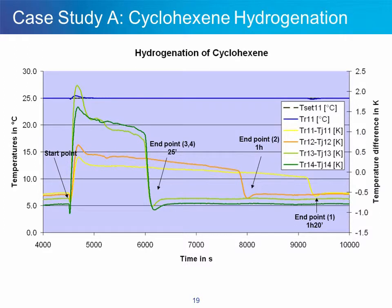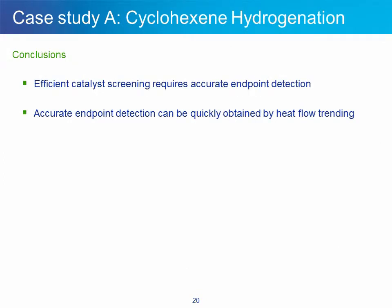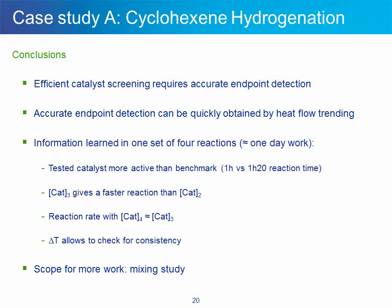You get here the kind of data that would be difficult to obtain using alternative chromatographic methods, where you would have to pull out a sample every so often and run an analysis, which in the best case takes about 20 to 30 minutes. As a conclusion for this first case study, the heat flow training can be used easily and graphically to determine the endpoints of a reaction in up to four vessels at the same time. What we've learned is that the new catalyst is more active than the benchmark, and that the reaction can be made faster by increasing catalyst amount up to a certain point, where mass transfer is the likely bottleneck. Conducting a mixing study is indeed probably a natural follow-up.